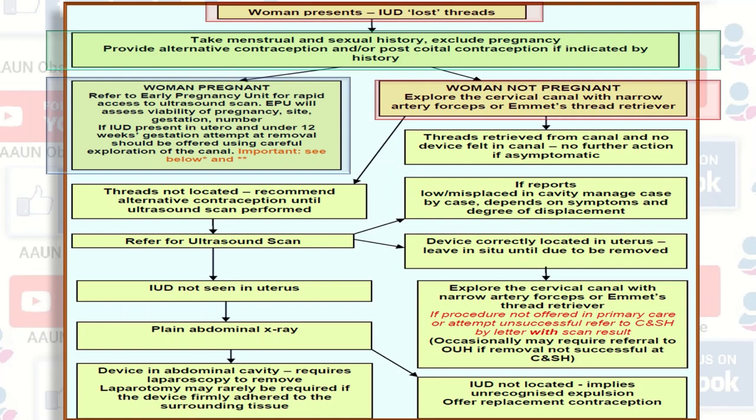If the woman is not pregnant, explore the cervical canal with narrow artery forcep or Emmet thread retriever. If threads are retrieved and no device is felt in the canal, no further action is needed if asymptomatic. If threads are not located, recommend alternative contraception until an ultrasound scan is performed.